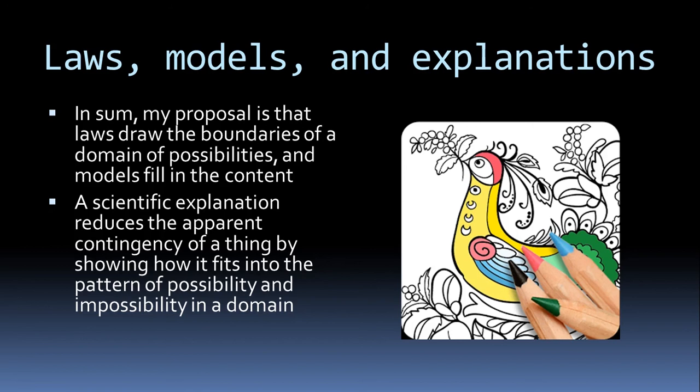In sum, here's a coloring book metaphor: laws roughly draw the outlines of a domain of possibilities, and models shade in the middle ground. The law tells you here are the limits of this domain, and the model tells you here is the content of that domain. To have a really good scientific explanation is to have a little bit of both of those things.